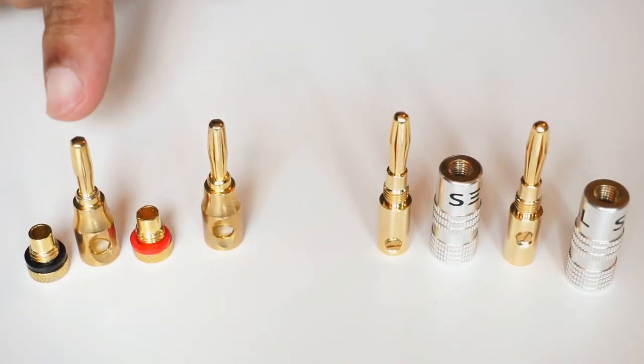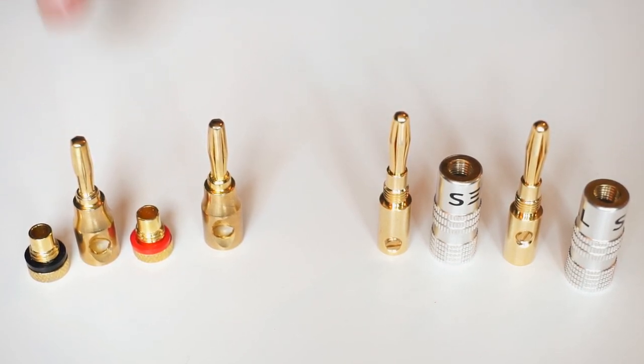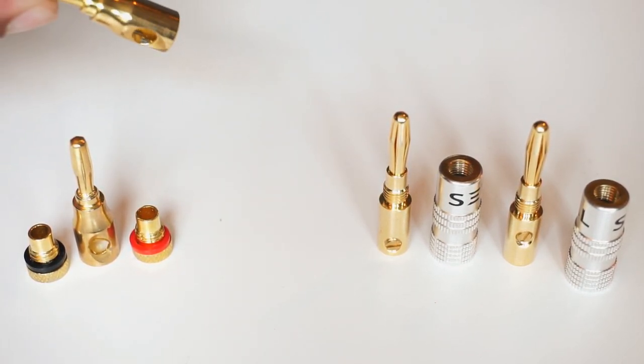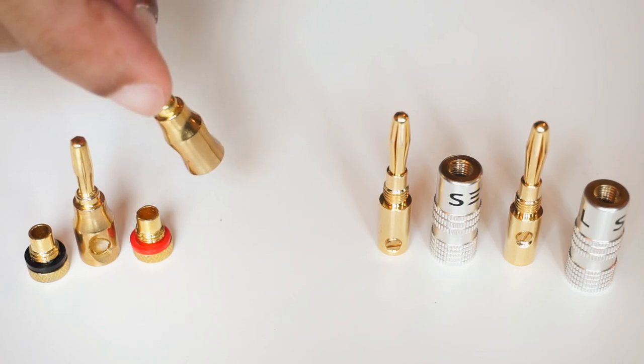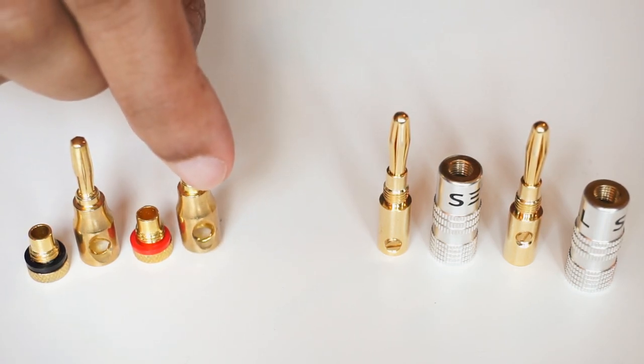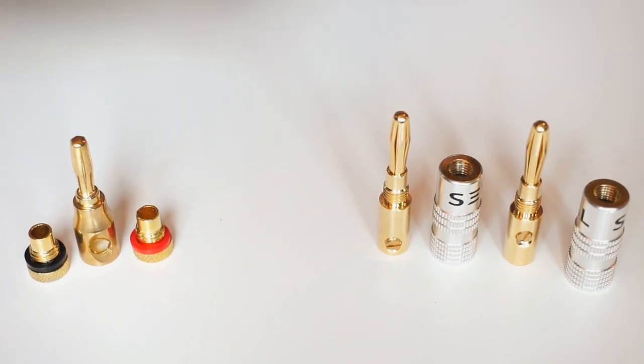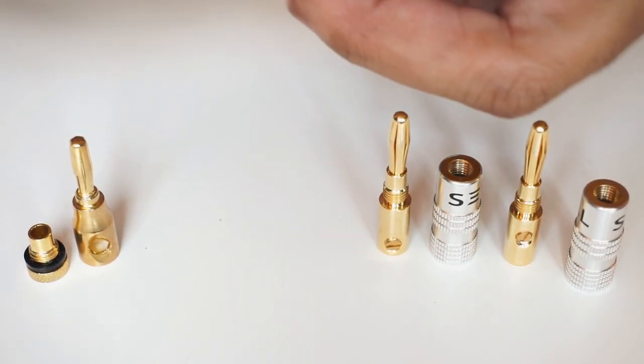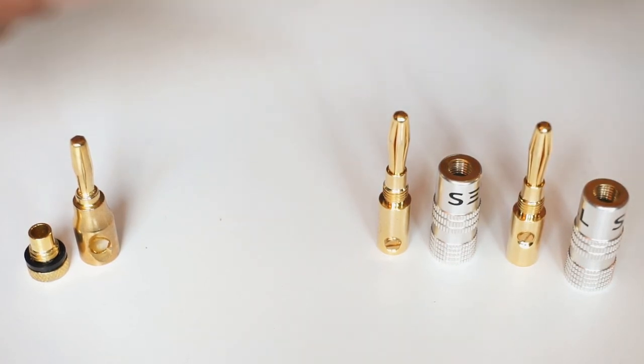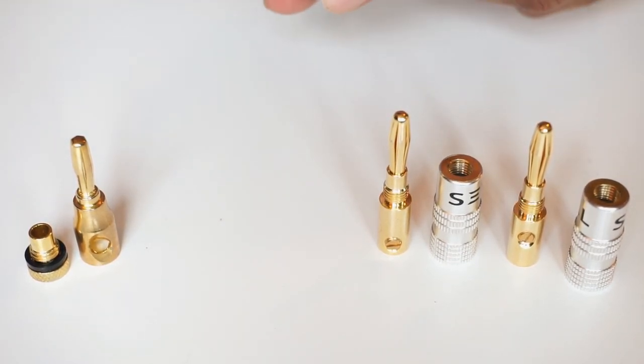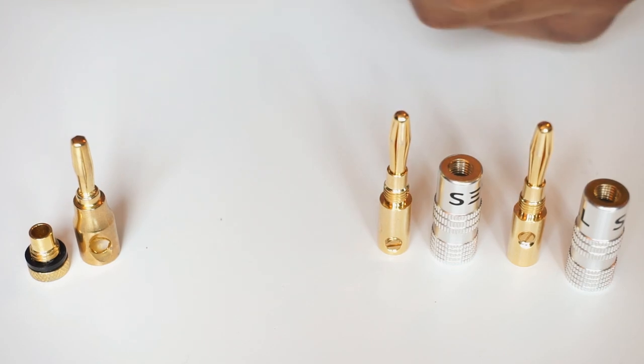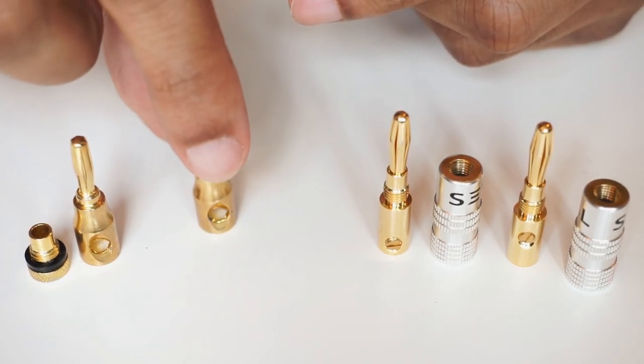Now, the set on the left is a cheaper set. It does not have a super strong connection. There's no screws. There's no clips or anything like that. Really, all you're doing is putting the wire through the hole and screwing the bottom in like so. That's it. So this would be a cheaper lower-end set of banana plugs, but they should be effective. It should still work.